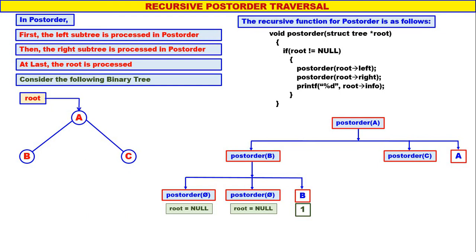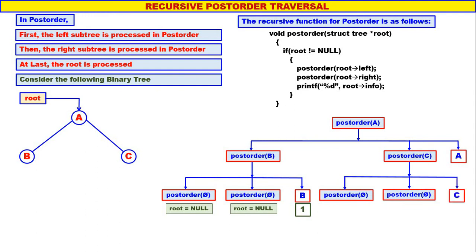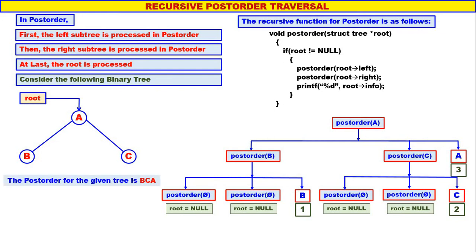Next we will come to post_order(C). Left child of C is null, therefore it is post_order(null). Right child of C is null, therefore it is post_order(null). Then you display C. When root is null nothing will happen. C is the second one to be displayed. Post_order(C) is over. After that we display A, which is the third. So the post order for the given tree is B, C, A.